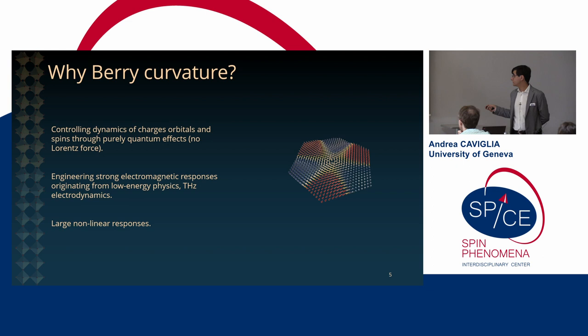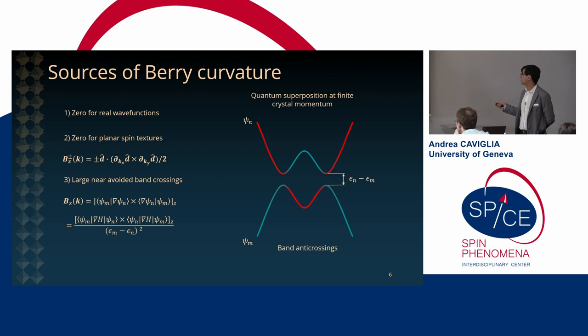So that's why we came into this topic. So where to look in condensed matter for this type of phenomena? Well we know that Berry phases are strictly zero for real wave functions. So we want to deal with systems that have an imaginary representation of the wave functions. For 2D systems we want to have something that goes beyond planar spin textures. So Berry curvature distributions are strictly zero if we have a spin texture confined on a 2D plane. And the third ingredient would be having some avoided band crossings between various bands which normally leads to an enhancement of these fields. So we want to look at some quantum superposition at a finite crystal momentum of some different bands.